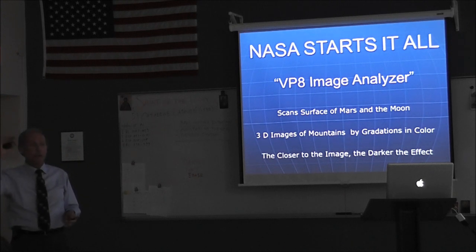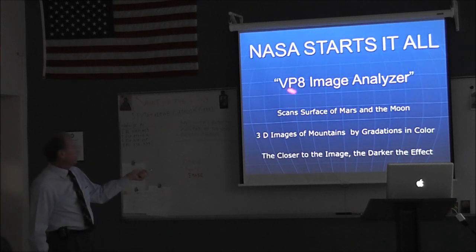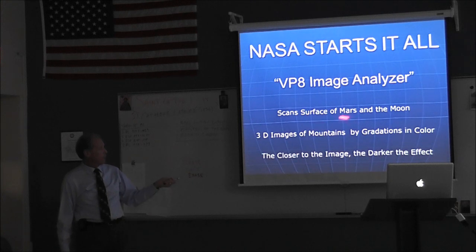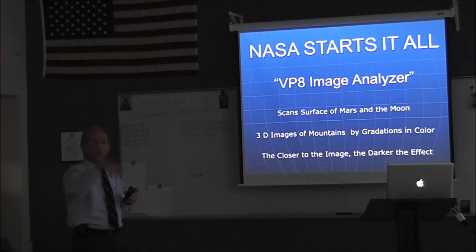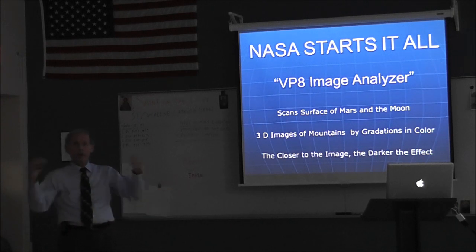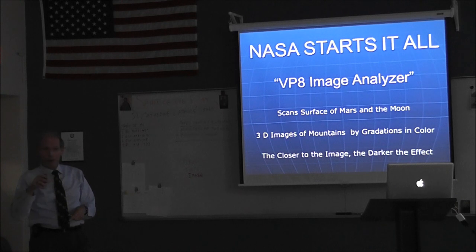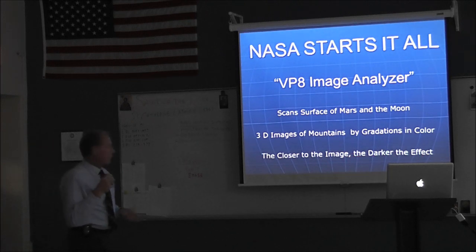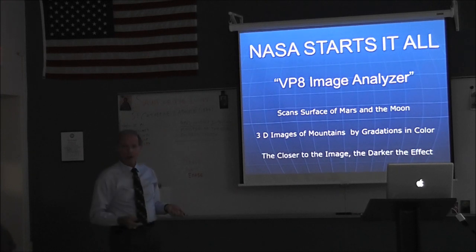This science begins because of America. America has evolved scientifically so high that NASA has an image analyzer in its satellites. And what they do is they put this in the satellites and it scans the surface of Mars and the Moon. And it looks at the gradations of black and white, like the height of a mountain. So, the top of the mountain is not quite as dark. As you go down the mountain, the shadow gets stronger. So, the computer looks at that difference in color, gradations in color. And it translates it into 10,000 feet, 30,000 feet, or a 10,000 foot valley. Okay? So, the image analyzer was used by NASA to look at the height of mountains and valleys. So, the closer to the image, the darker the effect.